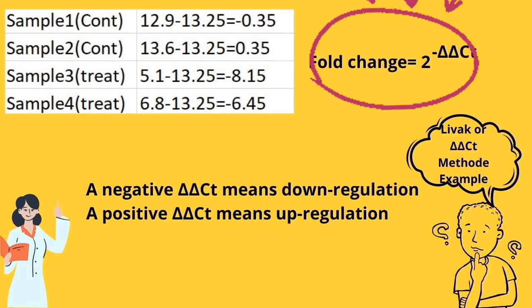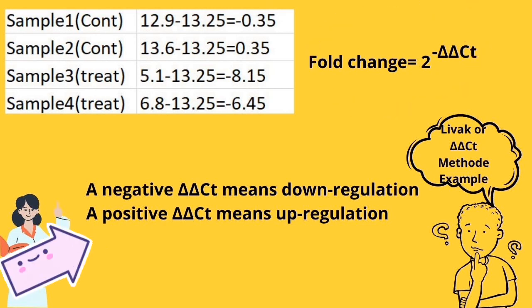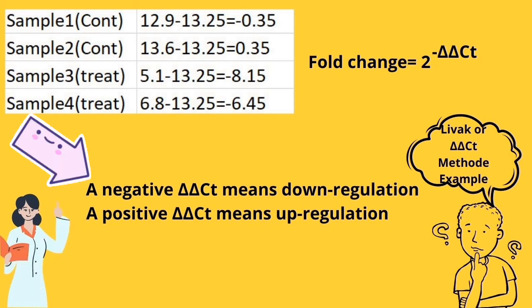If you calculate 2 to the power of negative delta delta CT for each sample, you will have fold change. Please keep in mind that positive delta delta CT shows upregulation and negative values show downregulation. Congratulations, it's done! You successfully performed delta delta CT method.